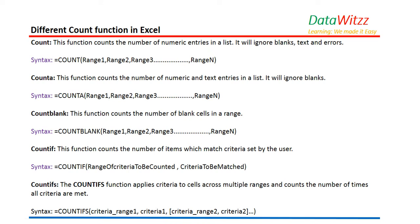The second function is COUNTA. COUNTA counts the number of both numeric and text entries in a list — it will ignore blanks only. The syntax works the same way: COUNTA(range1, range2, range3, ...) up to as many ranges as needed.